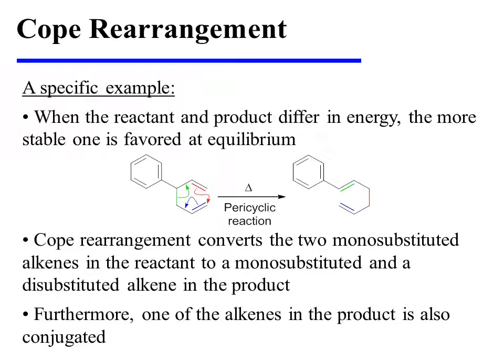The generic example shown previously had a reactant and product of equal energy. However, this is not always the case. When the reactant and product differ in energy, the more stable one is favored at equilibrium. In this example, cope rearrangement converts two monosubstituted alkenes in the reactant to a product containing a monosubstituted and a disubstituted alkene. Furthermore, in the product, one of the two alkenes is also conjugated to the aromatic ring. The higher level of alkene substitution and the conjugation in the product both make it lower in energy, and therefore the product is favored at equilibrium.